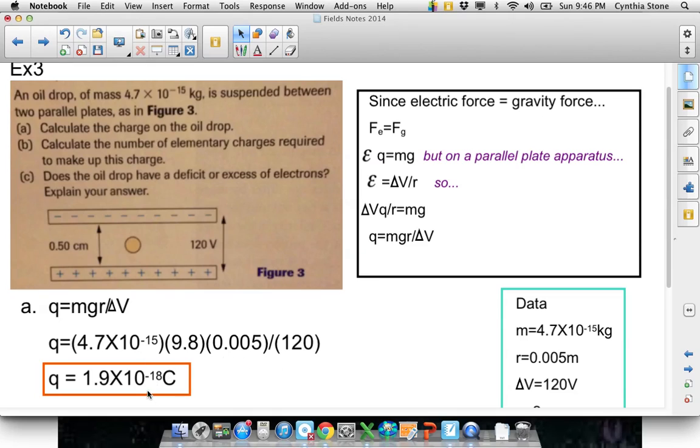And, solve for q. So, it's 10 times less than the charge on one electron. Part b says, calculate the number of elementary charges. That means number of extra electrons or protons, whenever you want to look at it.